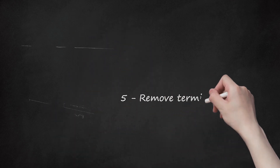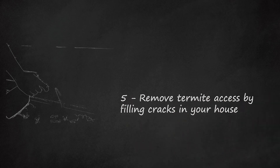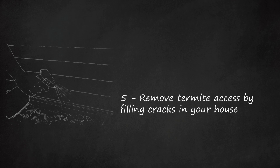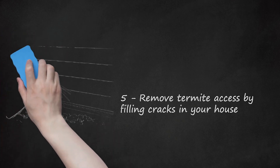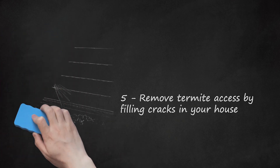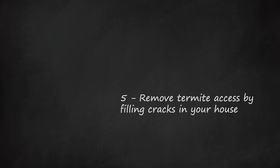Step 5: Remove termite access by filling cracks in your house. After locating where you think the termites may be coming from, make sure to fill the holes and treat the surrounding area with termiticide to prevent further termite infestations. Laying down termite poison around entry points will kill them before they can begin boring new tunnels.